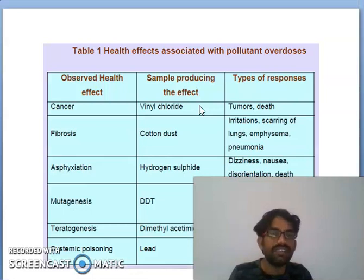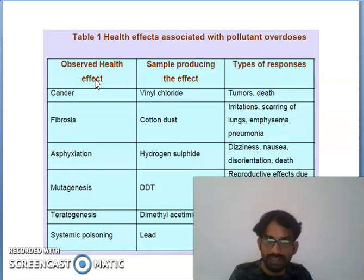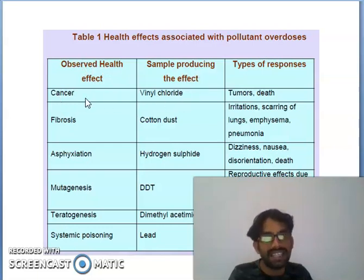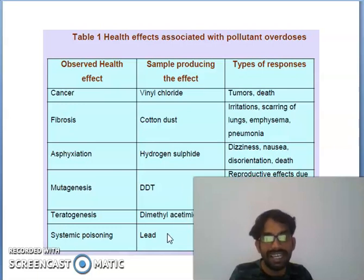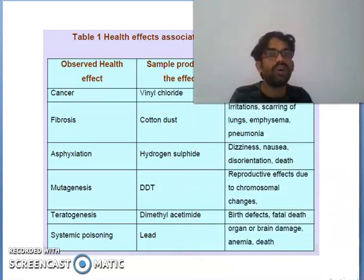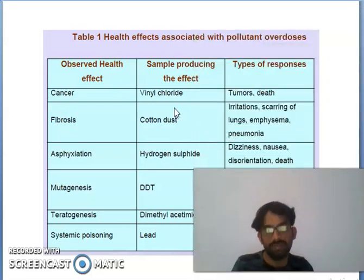You can see a table showing health effects associated with pollutant overdose. Observable health effects include: vinyl chloride causing cancer, tumors, and death; cotton dust; hydrogen sulfide; DDT; dichlorodiphenyl; triphenyl ethyl; dimethyl acetamide; and lead. These are some very toxic pollutants that cause various types of harmful responses in the human body.